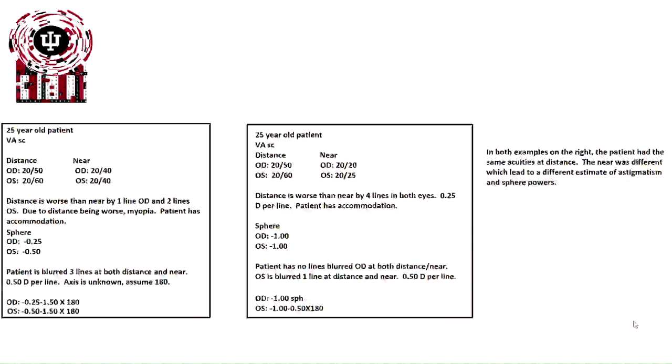Let's look at some more complex examples. On the left, we have a 25-year-old patient without glasses on. Their distance vision is 20/50 in the right eye and 20/60 at left eye. At near, it's 20/40 right eye, 20/40 left eye. So in this case, distance is worse than near by one line and two lines OS. Due to the distance being worse, myopia. Patient has accommodation, so we don't have to worry about hyperopia right now. Our estimated sphere power, because the distance is worse than the near, is a quarter diopter in the right eye and a half diopter in the left eye.